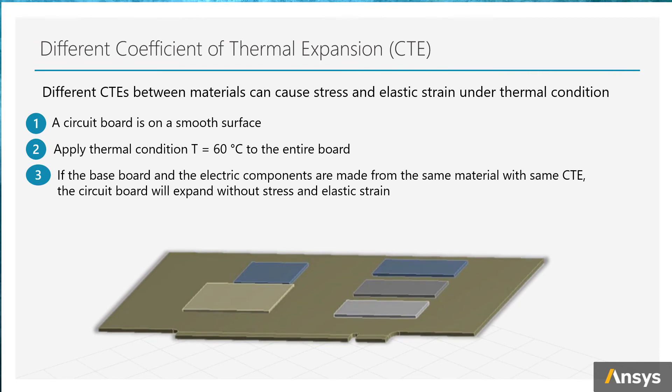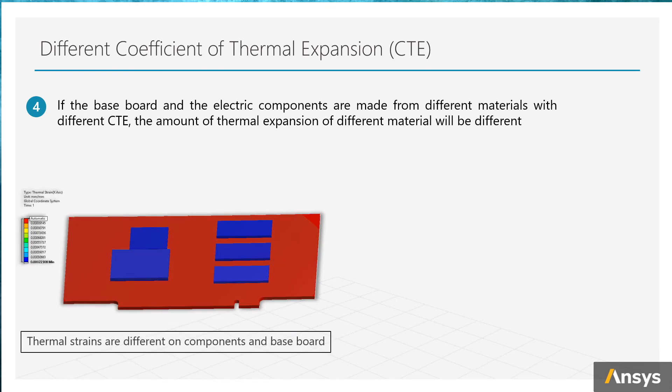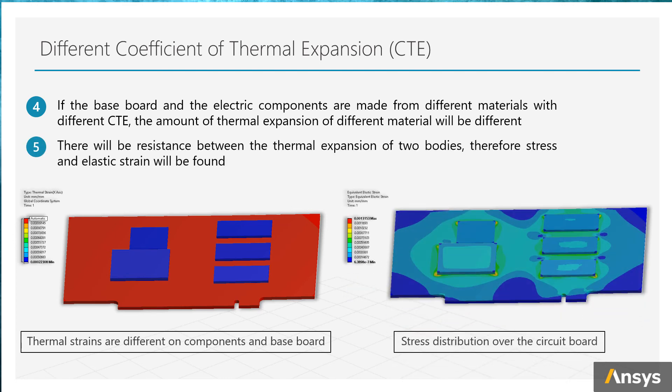However, in reality we know that the board and the electric components are definitely made from different materials, and the CTE of them surely are different. In this case, if there is thermal condition applied, the different parts will want to expand with different ratios, and this will cause resistance in the body. Therefore, stress and elastic strain will also be found in such case.